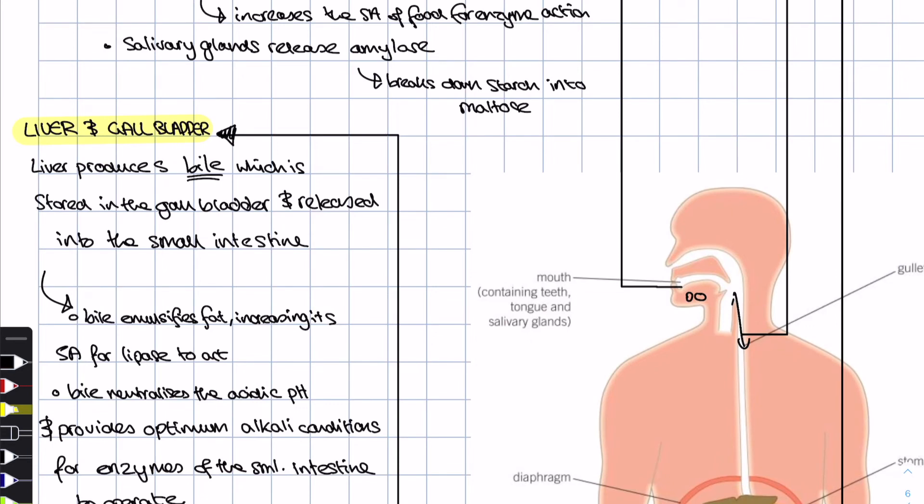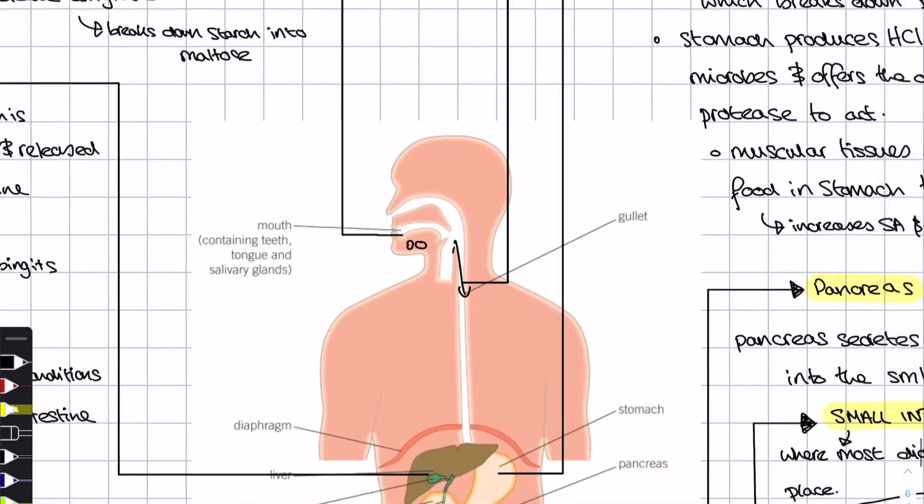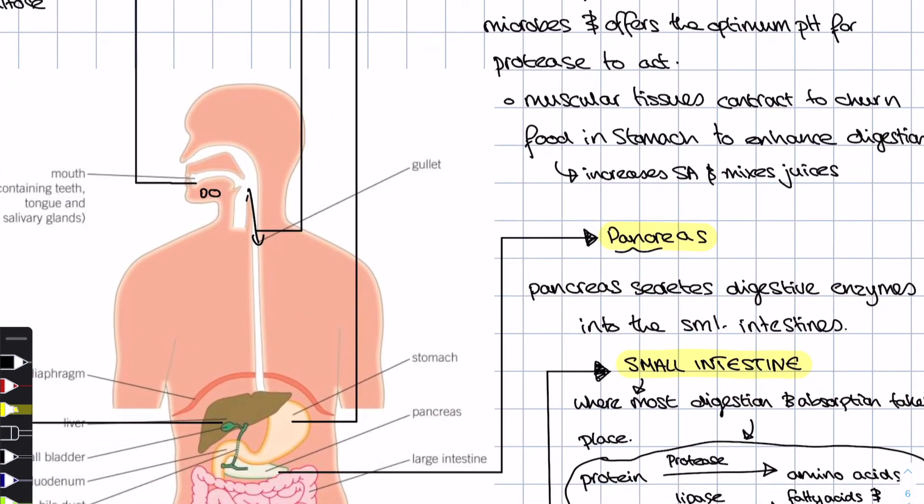Then the next thing is we said that the liver secretes bile into the small intestine after it's stored in the gallbladder. We talked about the roles of bile, how it emulsifies fat and provides that optimum alkali pH in the small intestine. And the pancreas, which is very important, produces a lot of the digestive enzymes in the small intestine, if not all of them. It produces protease, lipase, amylase, etc.